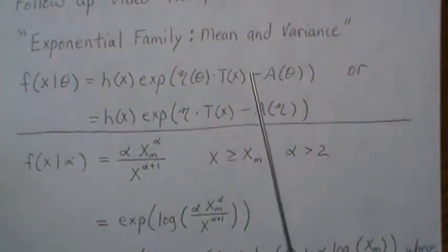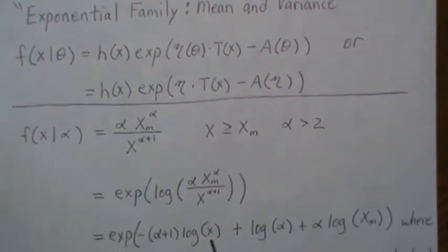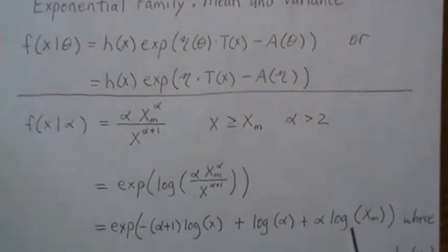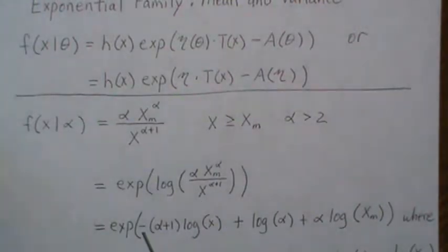Now the log has nice properties that we can break that up. The log of alpha is here, and then this is the log of X sub M to the alpha, but the alpha can be taken out front with no data here. For the denominator, because it's in the denominator it ends up being minus, and that exponent can be taken out front. So here we have the parameter and data, which looks like this.